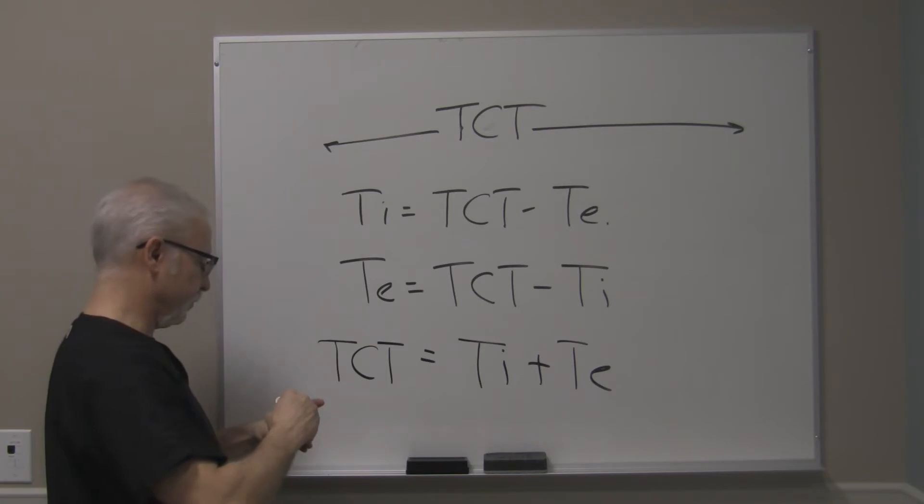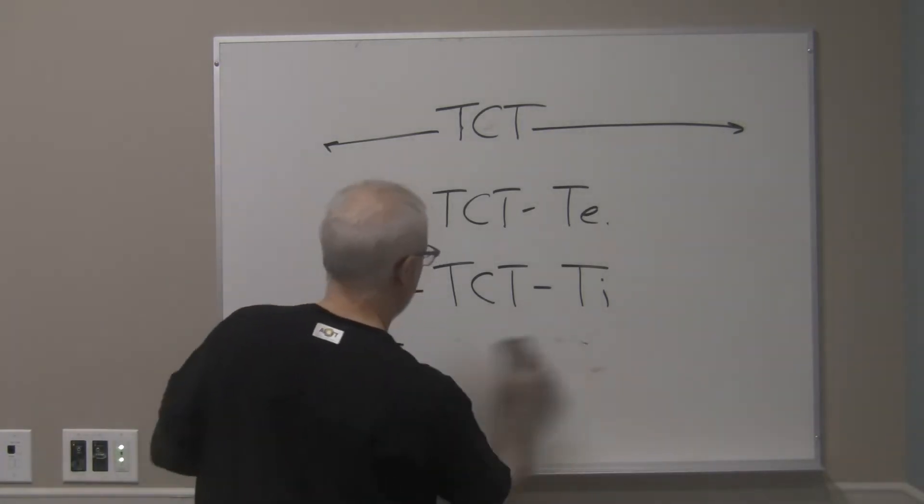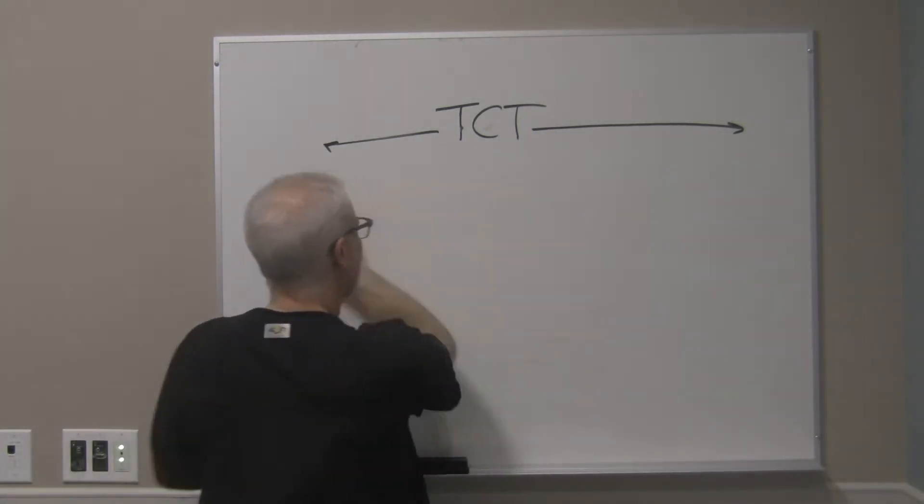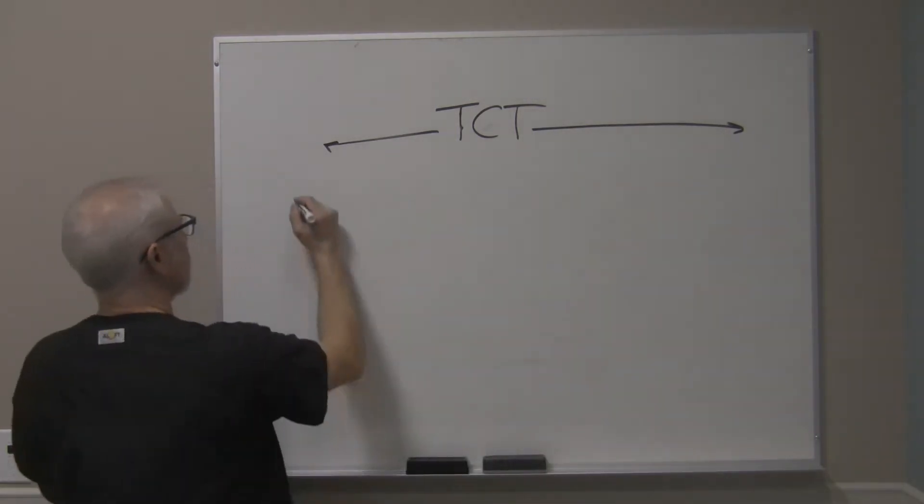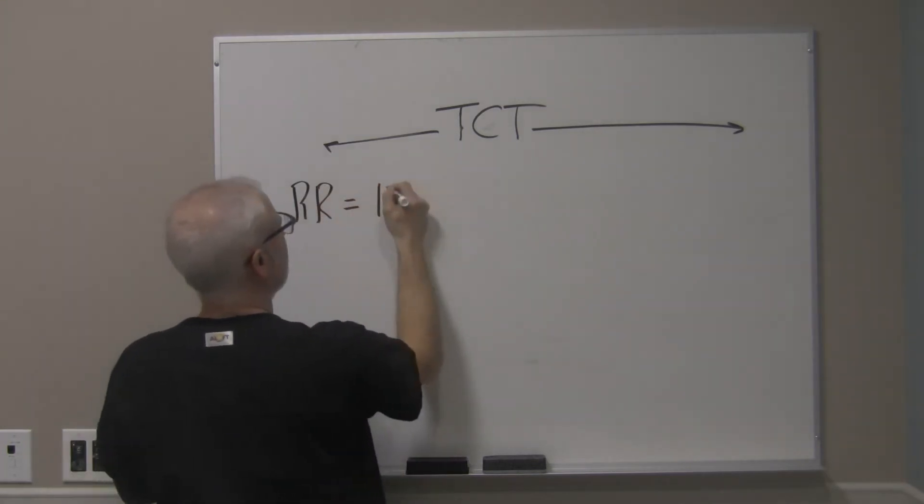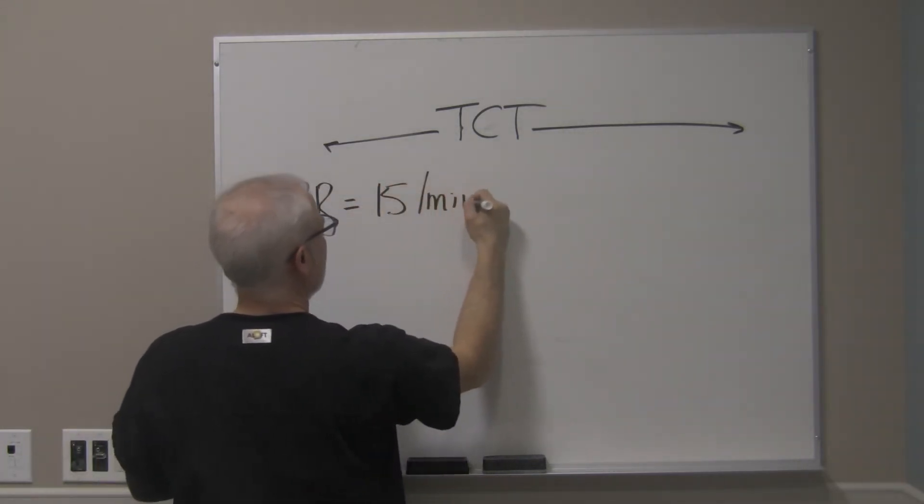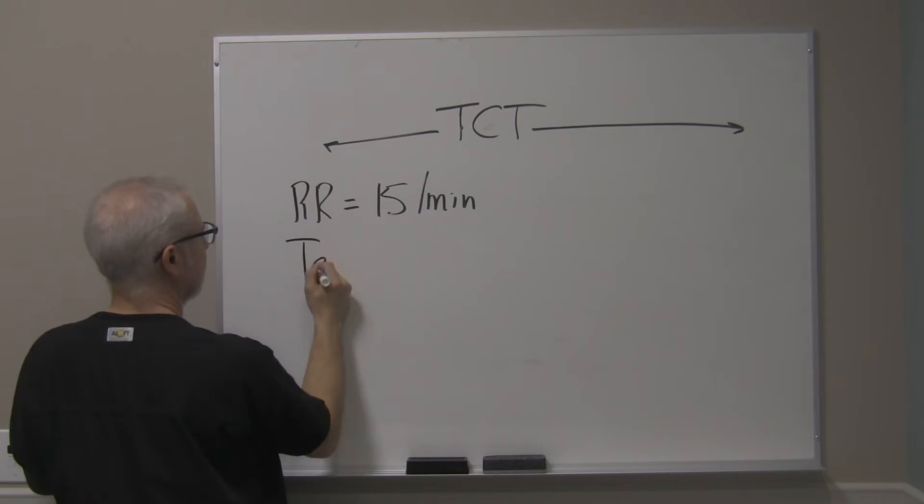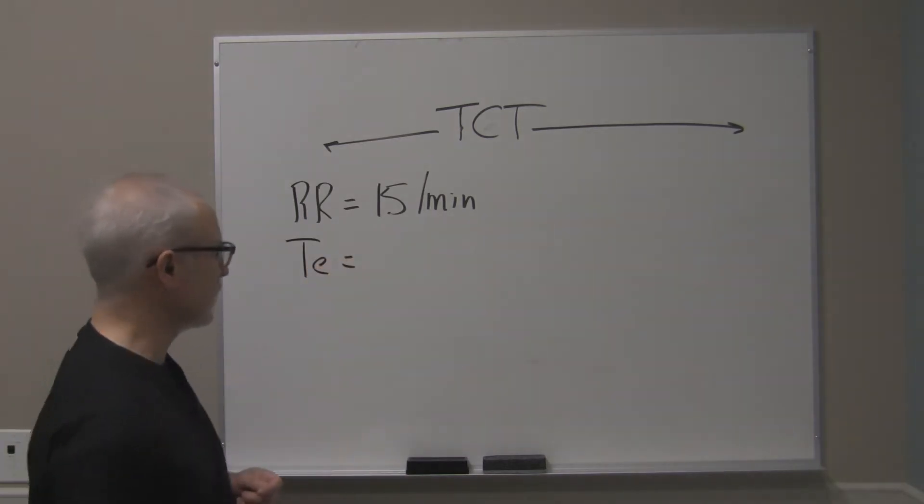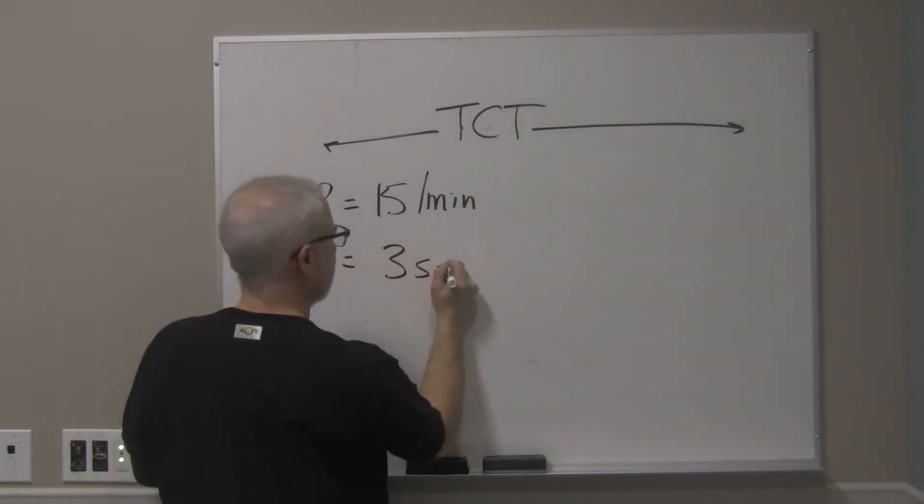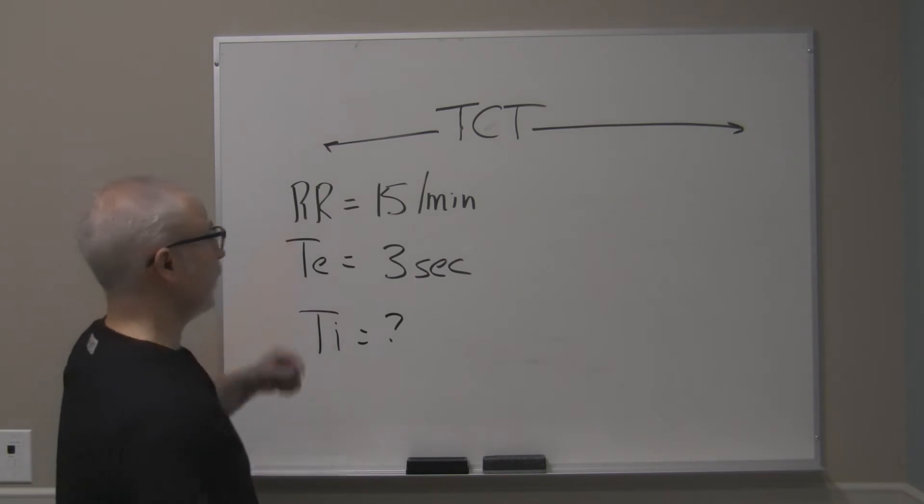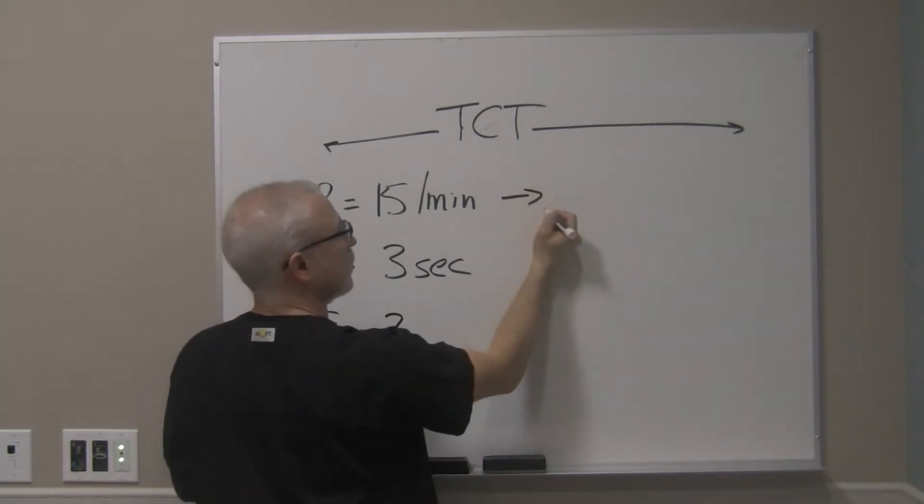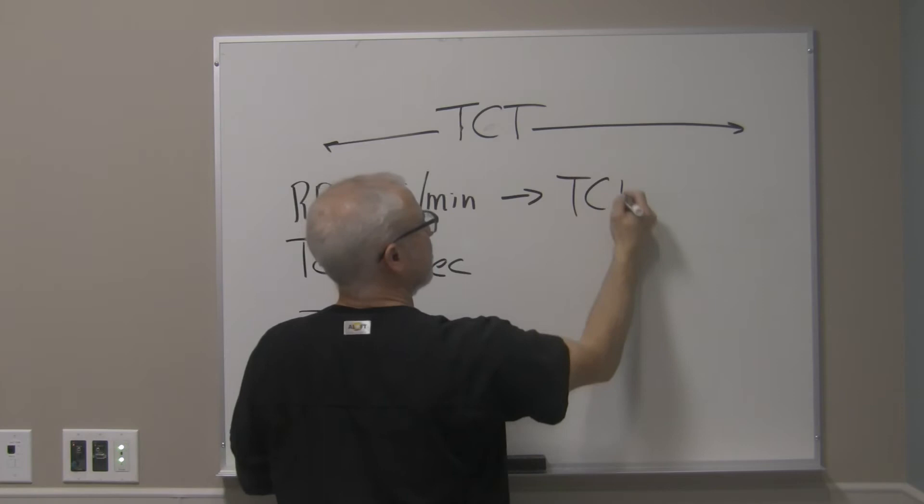All right, so let's do the first one. Now, if you happen to know the patient had a respiratory rate equal to 15 breaths per minute, and the TE, the expiratory time of that patient was, let's say, for example, 3 seconds, what's the TI? How do we solve that out? Well,